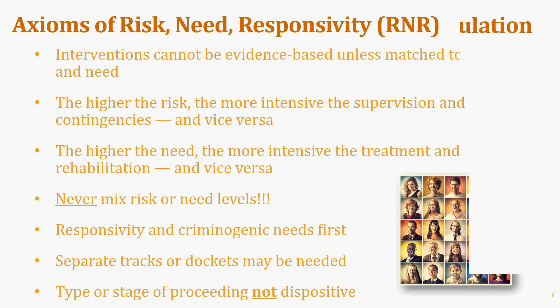The drug court target population evidence is absolutely unambiguous. Drug courts that treat high-risk and high-need individuals — those who are seriously addicted and/or mentally ill, with high-risk factors for treatment failure — reduce crime about twice as much as programs that serve low-risk or low-need offenders, and are 50% more cost-beneficial. All the effects of drug courts are attributable to treating the right people who need that intensity of supervision and treatment.